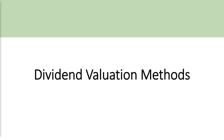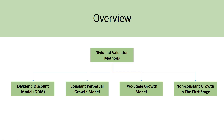Today we're going to be talking about dividend valuation methods, usually covered at the beginning of intermediate financial courses at the college level. It is a very important topic when valuing stocks. There are four common dividend valuation methods: the dividend discount model, the constant perpetual growth model, the two-stage growth model, and the non-constant growth in the first stage procedure, which is essentially a mixture of the dividend discount model and the constant perpetual growth model.